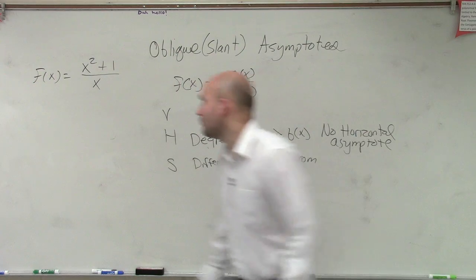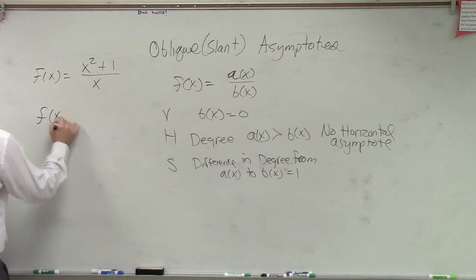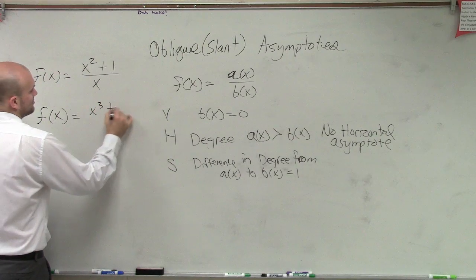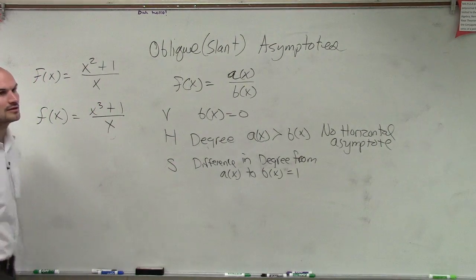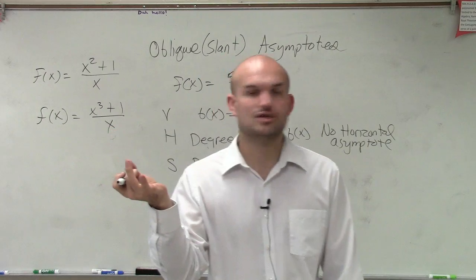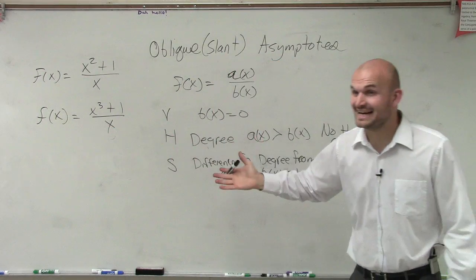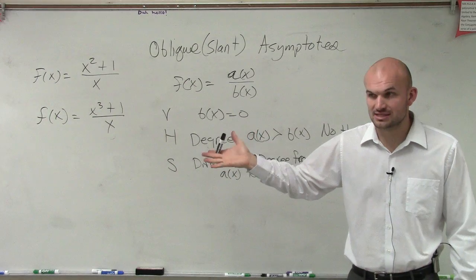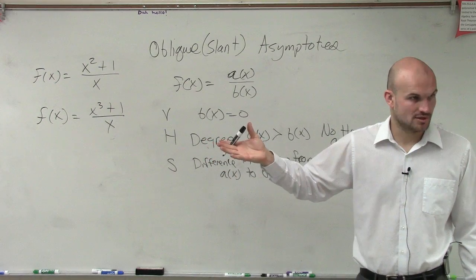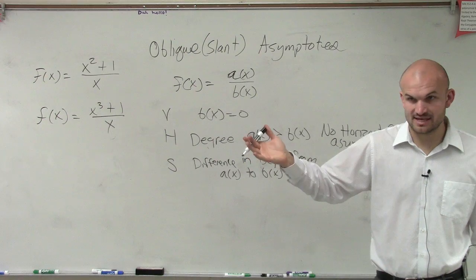However, if I did something like this, f of x equals x cubed plus 1 over x, you guys can see now the difference of the degrees is 2. So therefore, there's no horizontal asymptote, and there's no slant or oblique. Make sense?